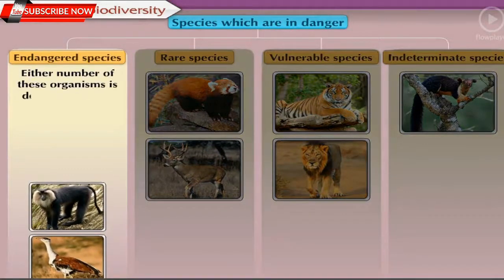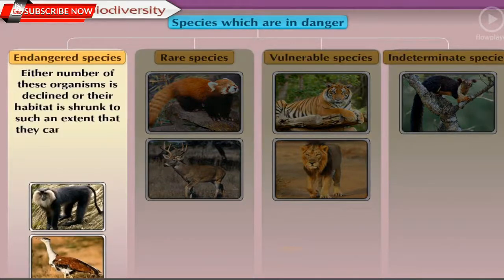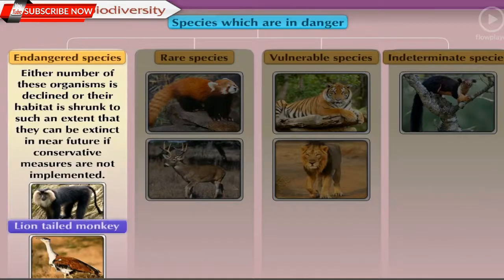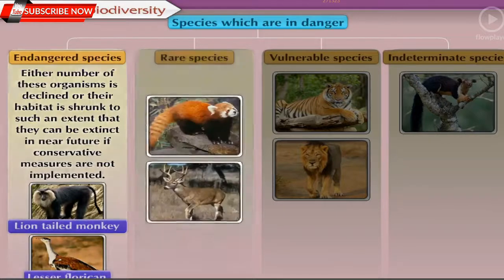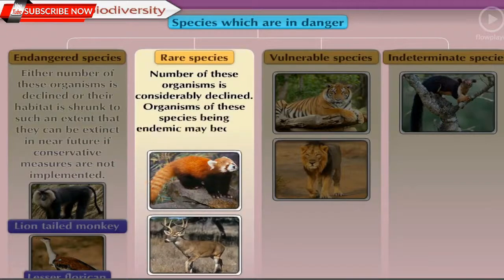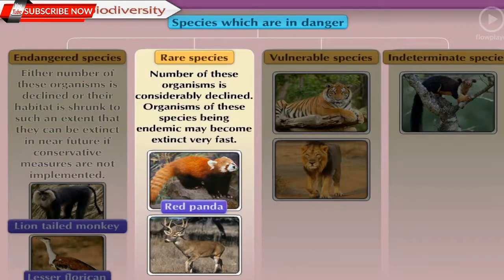Endangered species: the number of these organisms has declined or their habitat has shrunk to such an extent that they can become extinct in the near future if conservative measures are not implemented. Examples: lion-tailed monkey and lesser florican. Rare species: the number has considerably declined and these endemic species may become extinct very fast. Examples: red panda and musk deer (kasturi mrig).